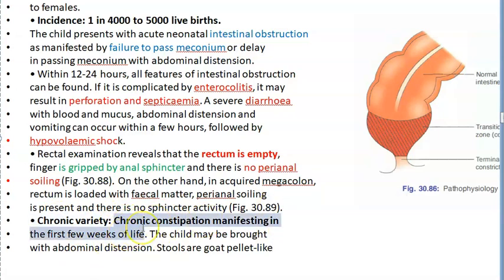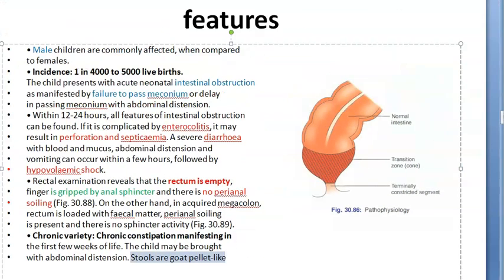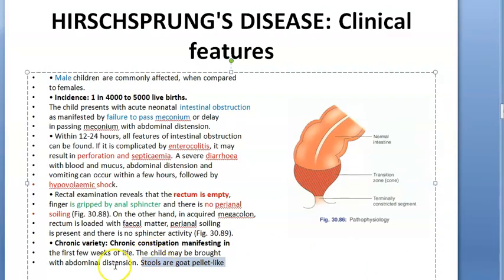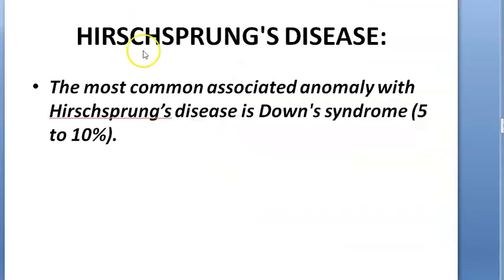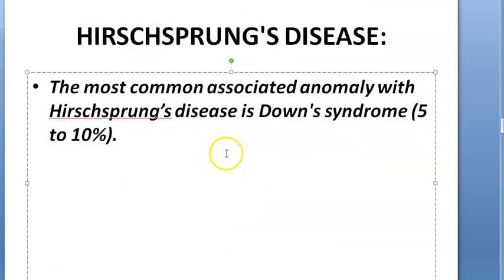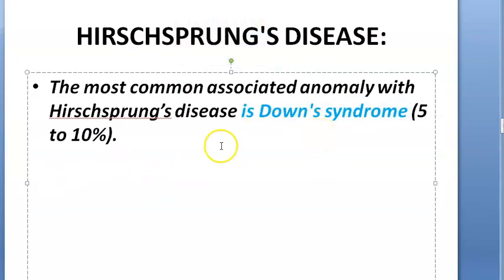In the chronic variety, there is chronic constipation from the first few weeks of life. The child presents with abdominal distension, and stools, when passed, are hard and pellet-like — similar to goat pellets.